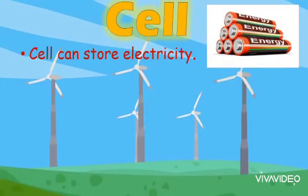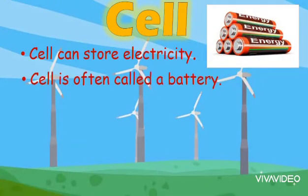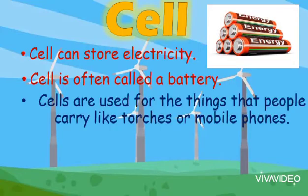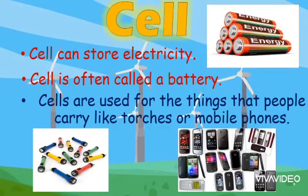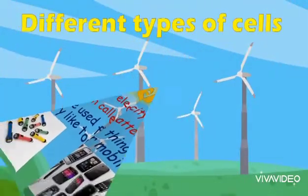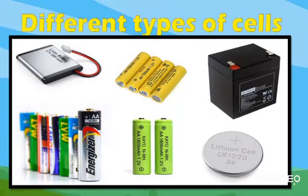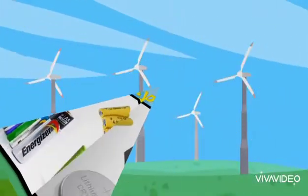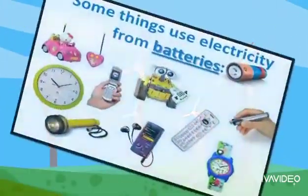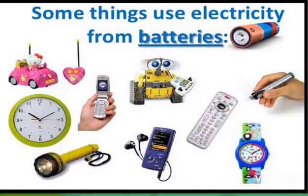These are the things that use mains electricity. Cells can store electricity — they are often called a battery. Cells are used for things that people carry, like torches or mobile phones. These are the different types of cells.